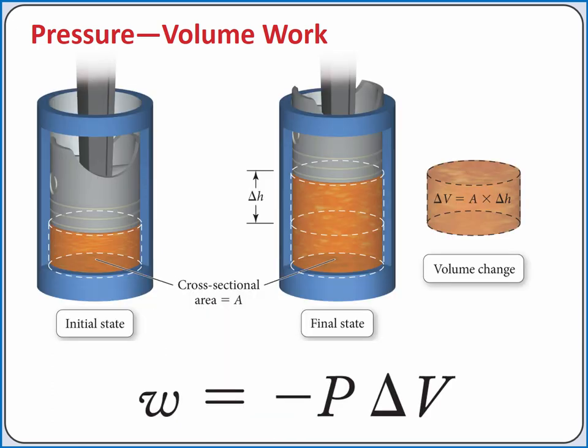We can calculate pressure volume work against a constant external pressure using the equation work equals negative pressure times change in volume.